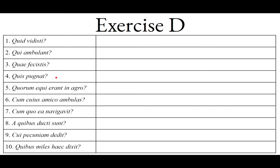Sententia quarta: Quis pugnat. This is nominative singular. Notice for the interrogative pronoun that the masculine and feminine singular have the same forms; the neuter has different forms. The neuter follows the quid paradigm: quid, cuius, cui, quid, quo. Whereas for animate, sexed things — asking who — that's masculine/feminine: quis, cuius, cui, quem, quo. So quis pugnat: singular, could be masculine or feminine. Who is fighting? We just don't know the gender.